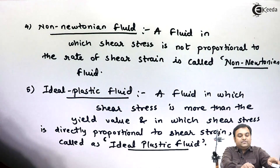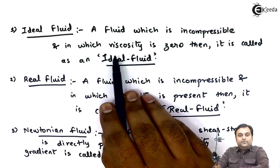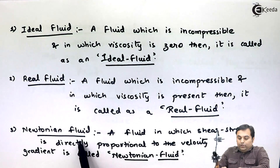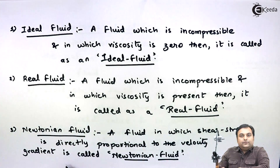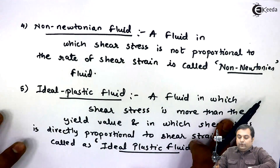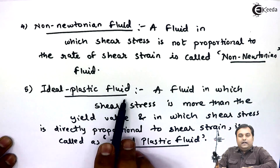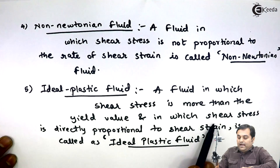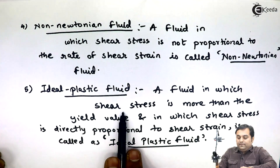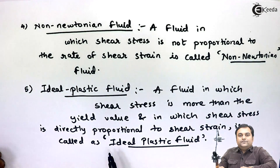To summarize, we have seen five types of fluid: ideal fluid — incompressible with zero viscosity; real fluid — incompressible with viscosity present; Newtonian fluid — shear stress directly proportional to velocity gradient, following Newton's law of viscosity; non-Newtonian fluid — shear stress not proportional to rate of shear strain, not following Newton's law; and ideal plastic fluid — shear stress more than yield value and directly proportional to shear strain.